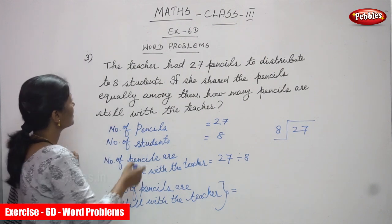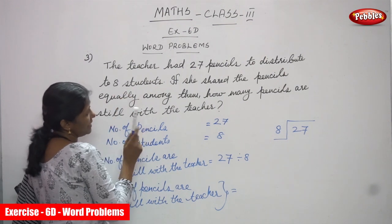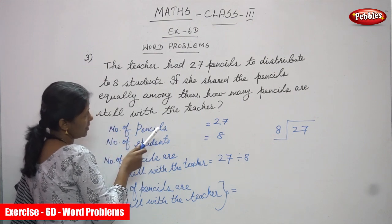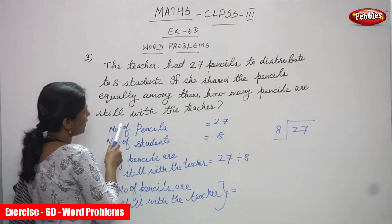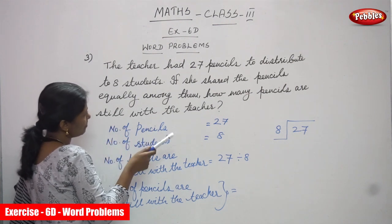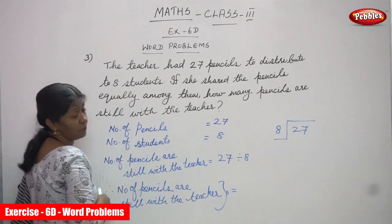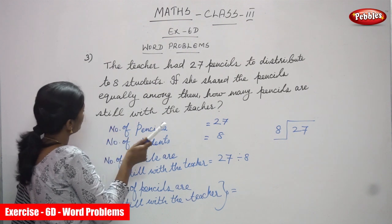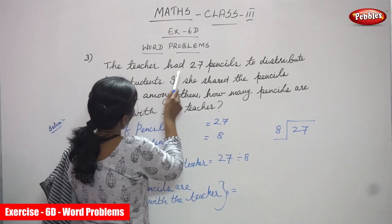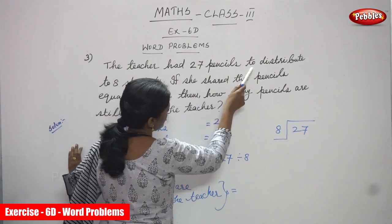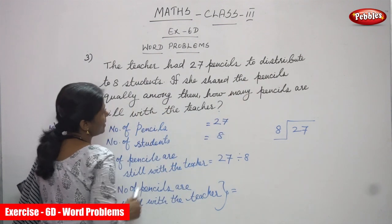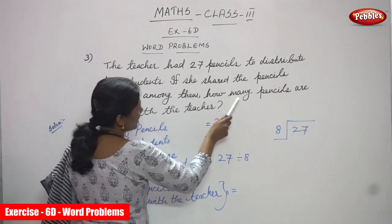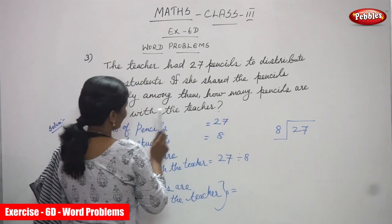Now we are going to see the third problem. The teacher had 27 pencils to distribute to 8 students. If she shared the pencils equally among them, how many pencils are still with the teacher? I'll repeat once again: the teacher had 27 pencils to distribute to 8 students. The teacher shared the pencils equally among them — how many pencils are still with the teacher?